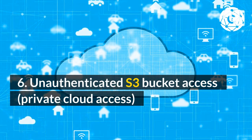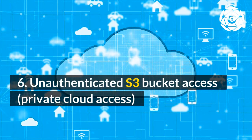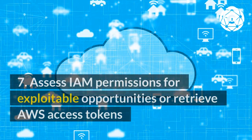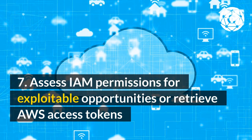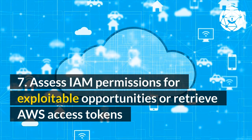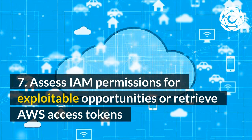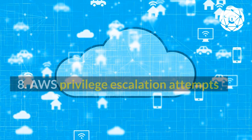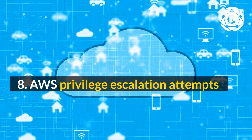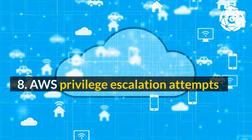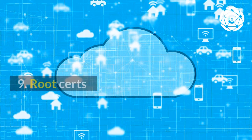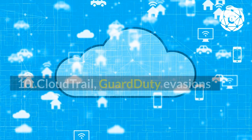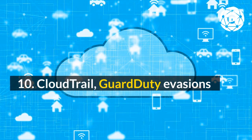6. Unauthenticated S3 Bucket Access and Private Cloud Access. 7. Assess IAM permissions for exploitable opportunities or retrieve AWS Access Tokens. 8. AWS Privilege Escalation Attempts. 9. Route Certs. 10. CloudTrail and GuardDuty Evasions.